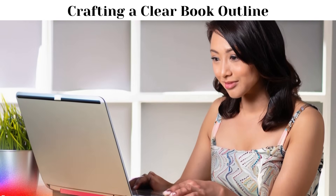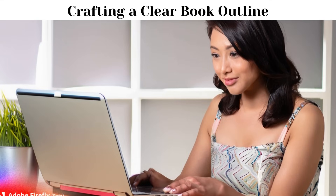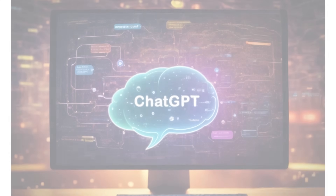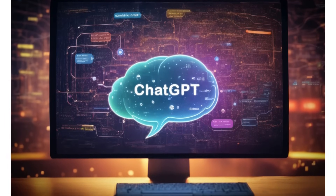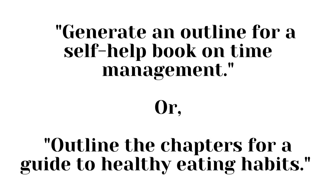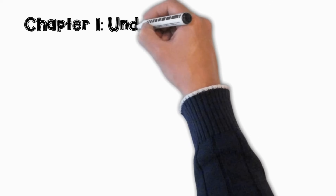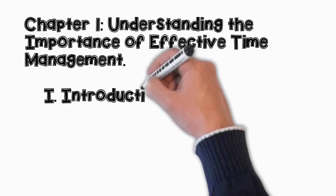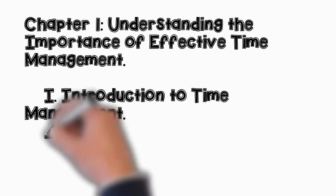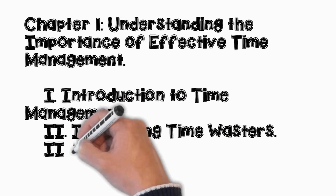Every successful non-fiction book starts with a well-structured outline. ChatGPT can assist you in creating an organized outline for your chapters. Just ask it to outline the chapters of your book, like: 'Generate an outline for a self-help book on time management,' or 'Outline the chapters for a guide to healthy eating habits.' For the first prompt, ChatGPT may respond with Chapter 1: Understanding the Importance of Effective Time Management, including subtopics like Introduction to Time Management, Identifying Time Wasters, and Setting Priorities and Goals — and so on, for around 9 to 10 chapters.